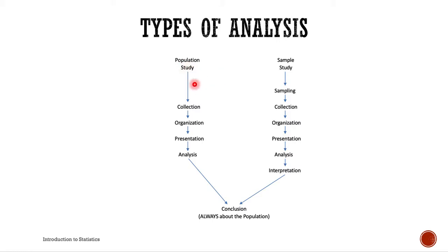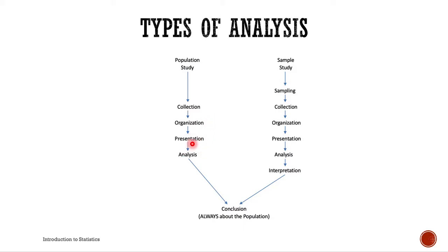We can show a diagram of how these two types of analysis are done. Both types of analysis end up in a conclusion, which is always about the bigger group — the population. Let's start with the population study. Since it's a population study, first we collect data. After we collect that data, we organize it, then put it in the correct presentation, then we analyze it, and therefore we can conclude about this population since we took the data directly from it.